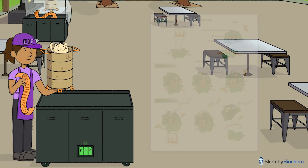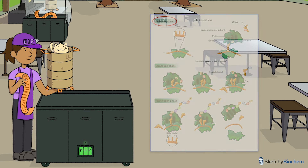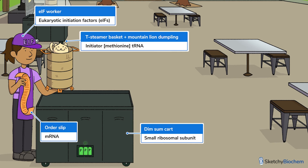First, initiation. Eukaryotic initiation factors help attach the small ribosomal subunit to the initiator tRNA carrying methionine before bringing the complex to the 5' cap of mRNA. To simplify things, we'll have this worker represent all the initiation factors. Her job is to bring the pieces together — the order slip, dim sum cart, and a tea steamer basket with the cutest mountain lion dumpling ever.